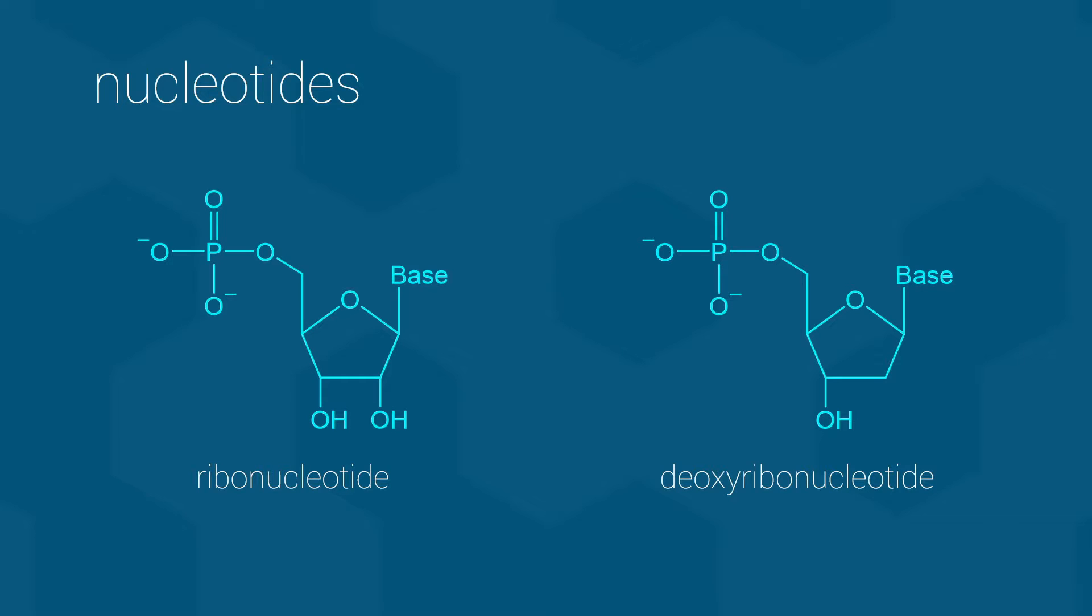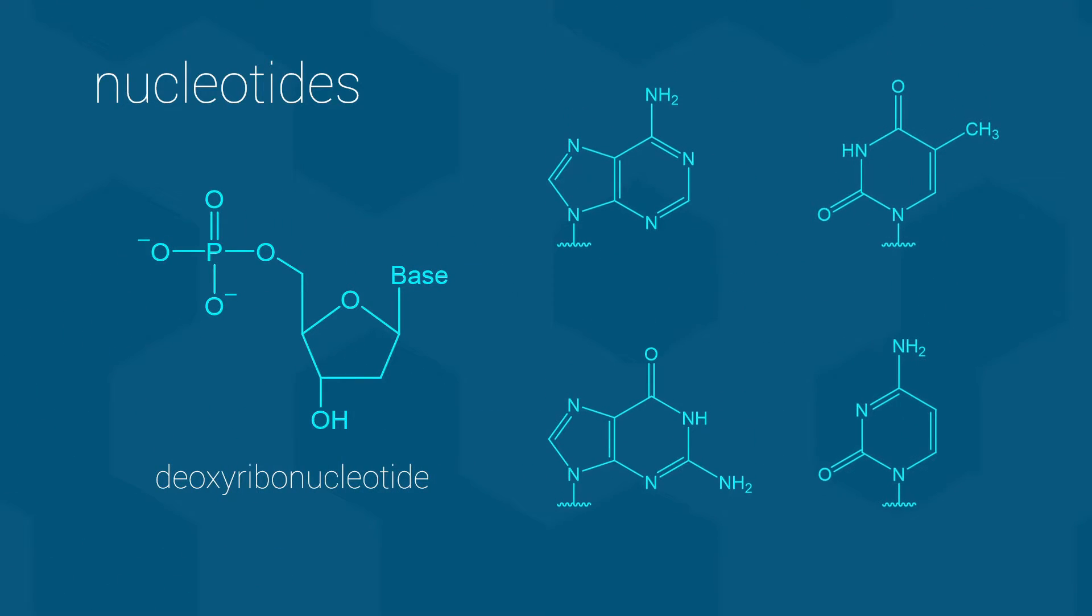Nucleotides differ in their base group, and for each basic type of nucleotide there are four possible bases. Let's start with the deoxyribonucleotides since they are more well known. Each deoxyribonucleotide uses one of four bases: adenine, thymine, guanine, and cytosine.